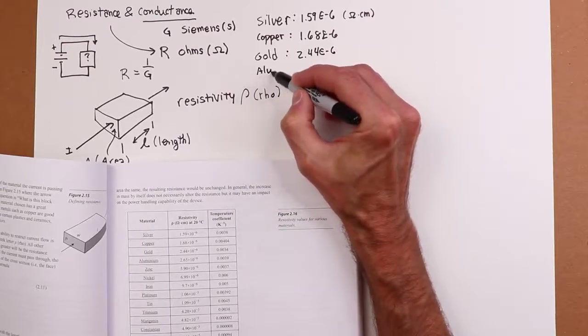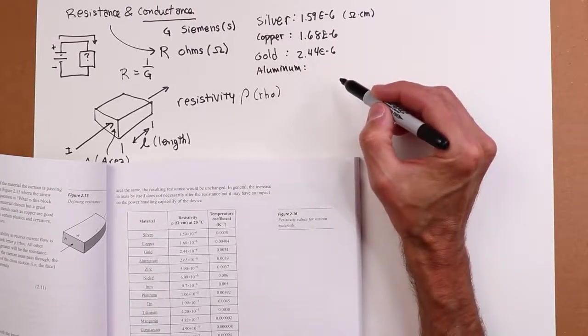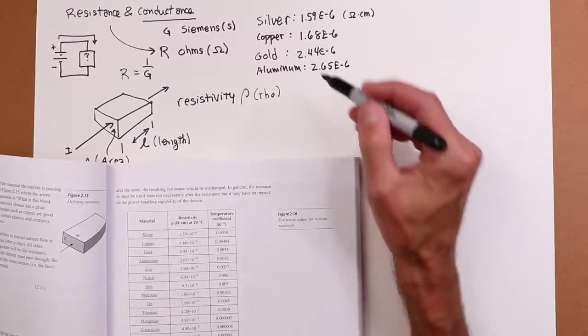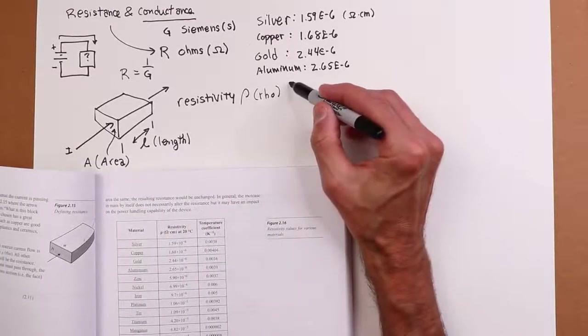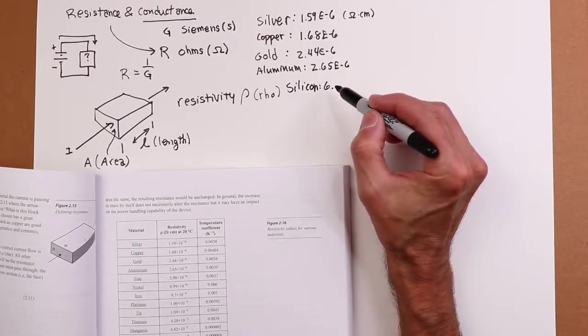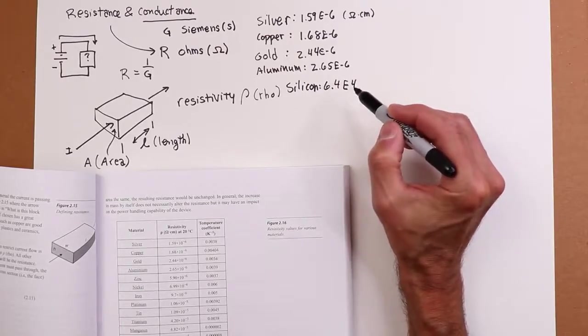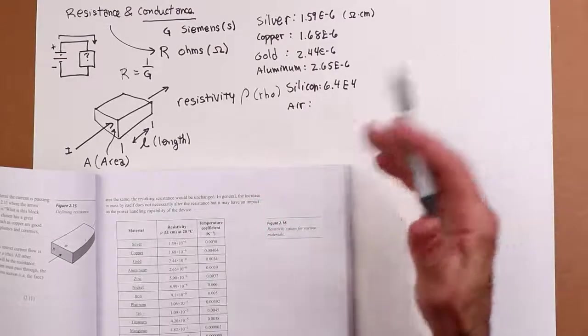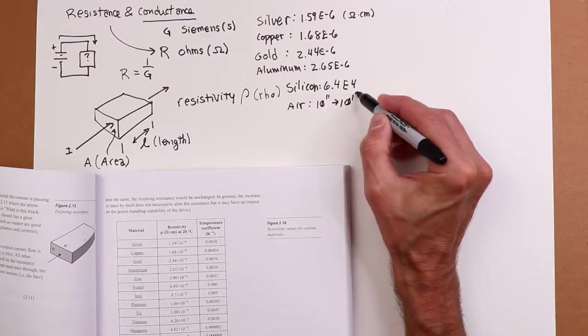And as you can guess, if it's resistivity, the bigger this number is, the more resistive it is, the less conductive it is. Gold 2.44. Aluminum, aluminium if you prefer, 2.65. And then we can go into some other materials. For example, silicon is way, way larger. We're looking at about 6.4 times 10 to the fourth. Get into air. What is the resistivity of air? This depends a lot on humidity and so forth, but basically we give it a range. 10 to the 11th to 10 to the 17th. Pretty wide range.